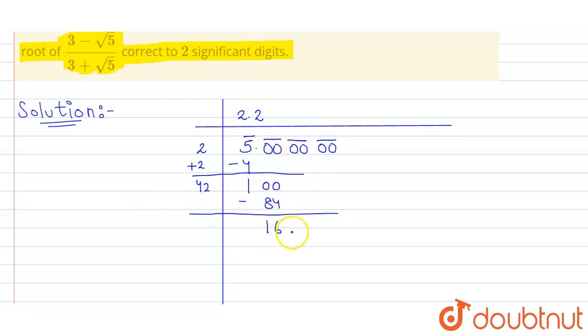Now 100 minus 84 is 16. Now we will take this two zeros again. And we add this 42 plus 2 is 44. Now we have to take number less than 1,600. So 443 into 3 is 1329.